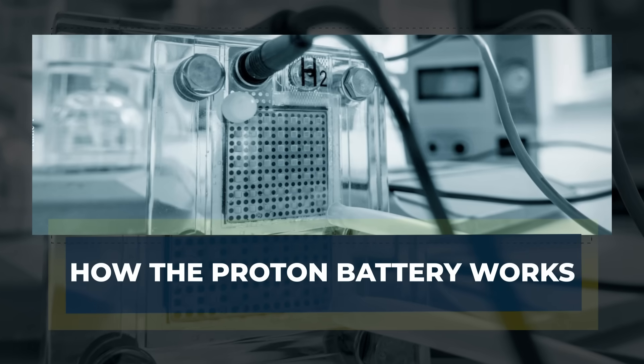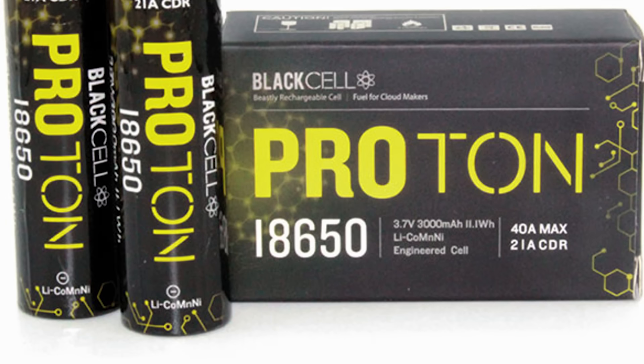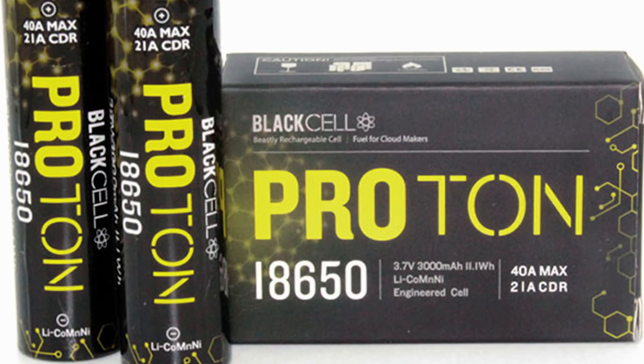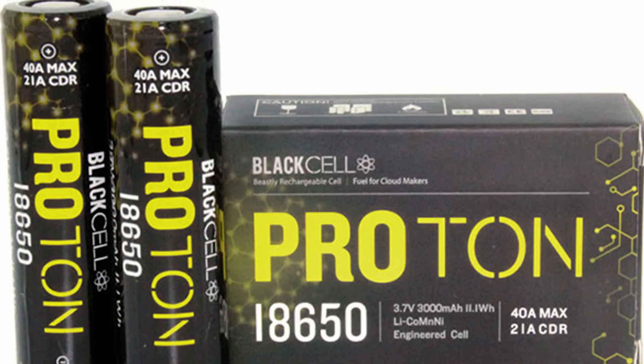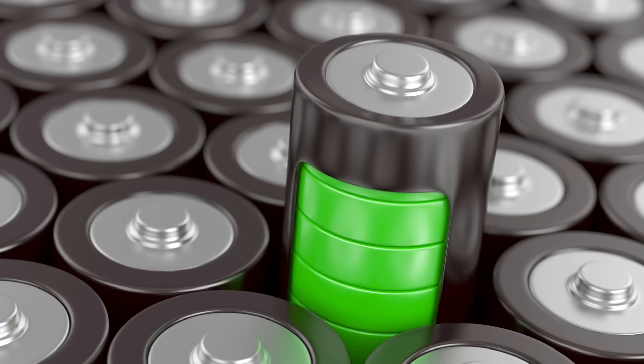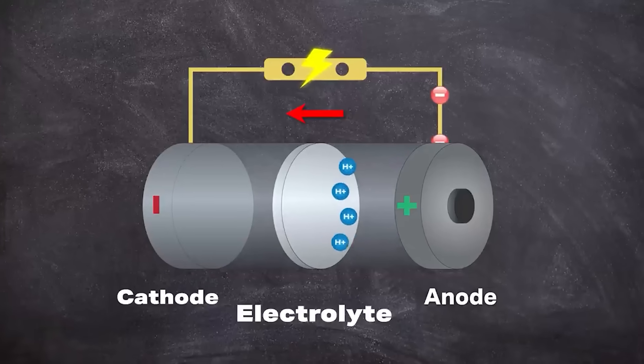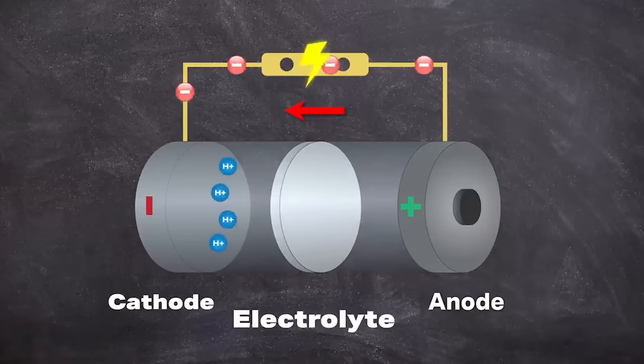How the Proton Battery Works. A proton battery might sound complex, but its basic principle is easy to understand. Like any battery, it has two sides: an anode and a cathode, separated by an electrolyte.